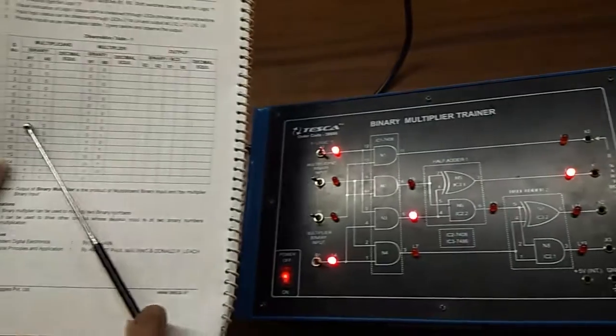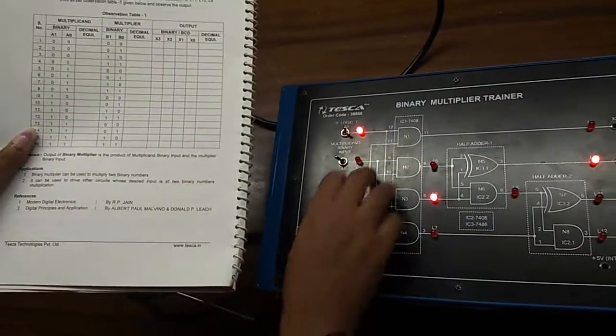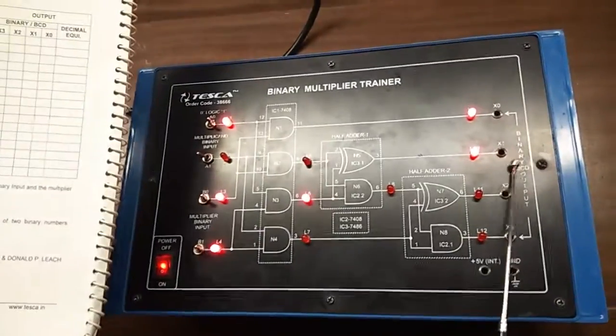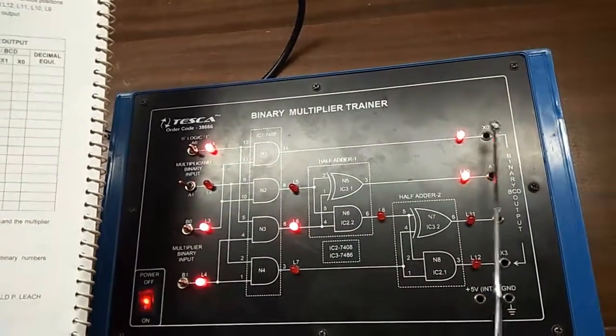Now we will give number 8 it is 0 1 and 1 1. We can see that x0 and x1 are glowing. The output will be 0 0 1 1.